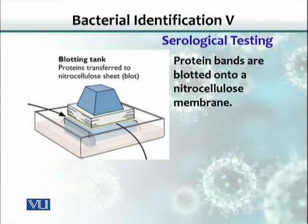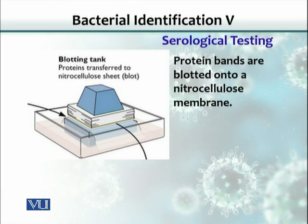A specific protein that we want to detect could be detected by the use of antibodies, the same method as we used in ELISA. The antibody has to be labeled with some probe, and then we would allow the filter that has the bands on the nitrocellulose filter. We would allow the antigen-antibody interactions to take place, and then we would have a detection system by which we detect the specific band if that antigen is there.